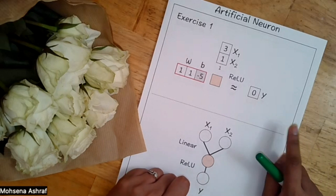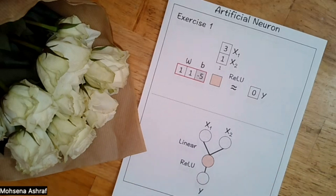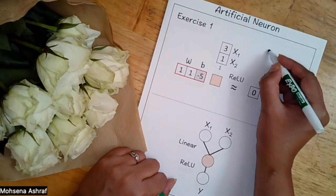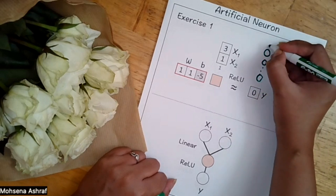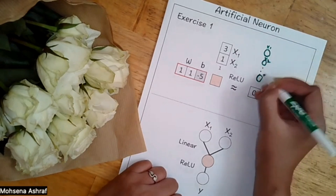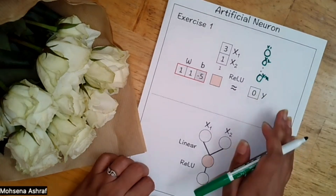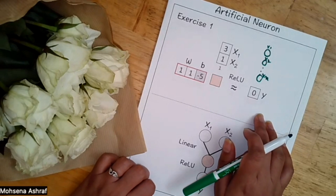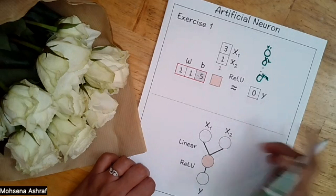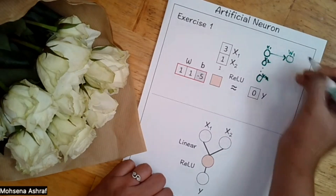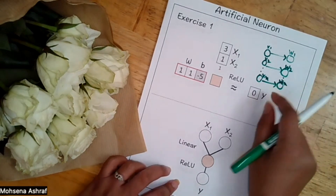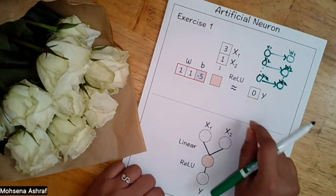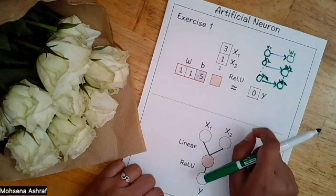Artificial neurons are computational units that mimic the behavior of biological neurons in the human brain. An artificial neuron has several components. It has multiple inputs — x1, x2, dot dot xn — which are numerical values representing features of the data being processed. Each input is associated with a weight W: W1, W2, and Wn, which determines the influence of that particular input on the neuron's output. These weights can be adjusted during the learning process, allowing the neuron to learn from the input data.